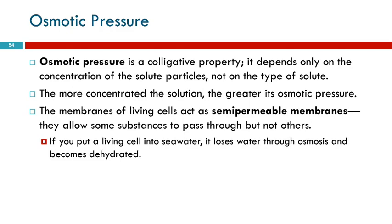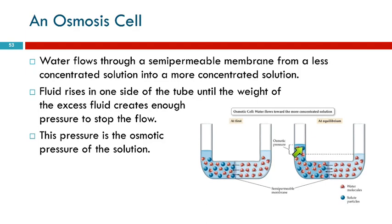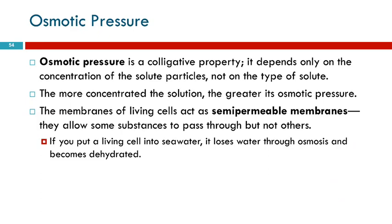Osmosis, or osmotic pressure, is a colligative property. The difference in heights between the two sides is going to depend on how many solute particles are on that side — it doesn't really matter what they are. It could be sodium chloride, it could be potassium iodide — it's the number of particles that matters. That makes it a colligative property. The more concentrated the solution is, the greater the osmotic pressure.